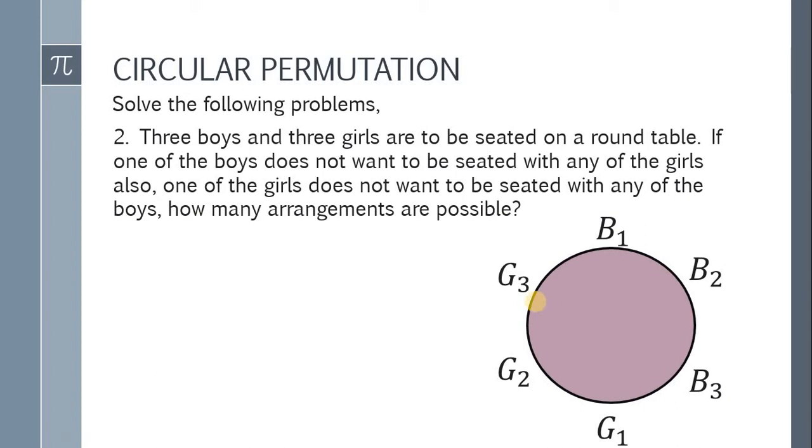Sa figure natin, ka-identify natin sino dyan yung boy na ayaw tumabi kay girl at yung girl na ayaw tumabi sa kahit anumang boy. Ang tendency, sila yung napapagitnaan nung dalawang boy at nung dalawang girl. Since ayaw nyo tumabi sa kahit anumang girl, dapat napapagitnaan lang siya ni B1 at saka ni B2. So igugroup natin sila as one group. Ang tendency si B2 ay palagi nasa gitna ni B1 saka ni B3.